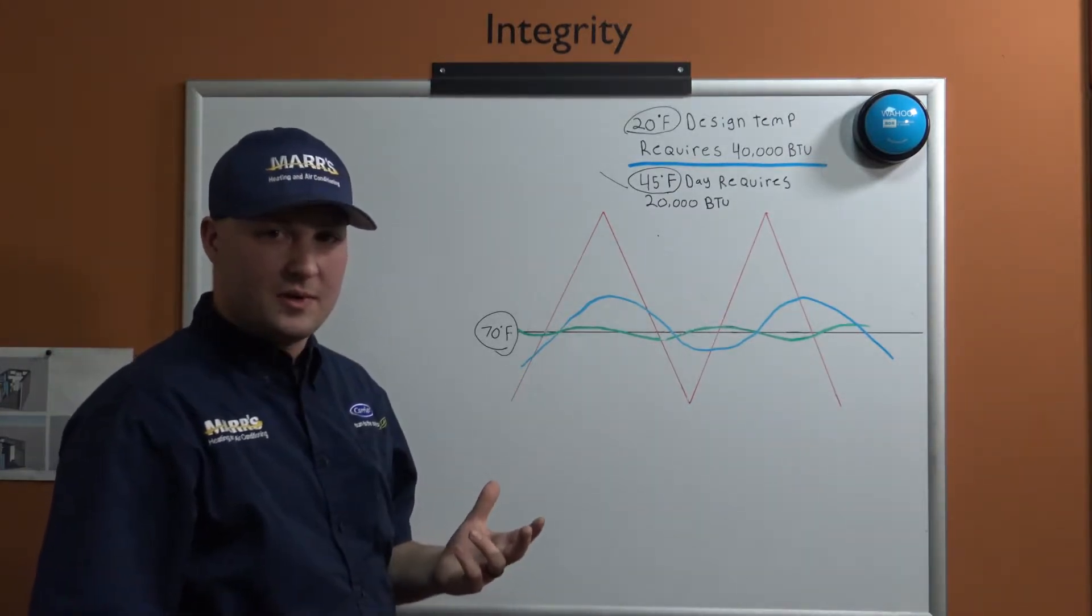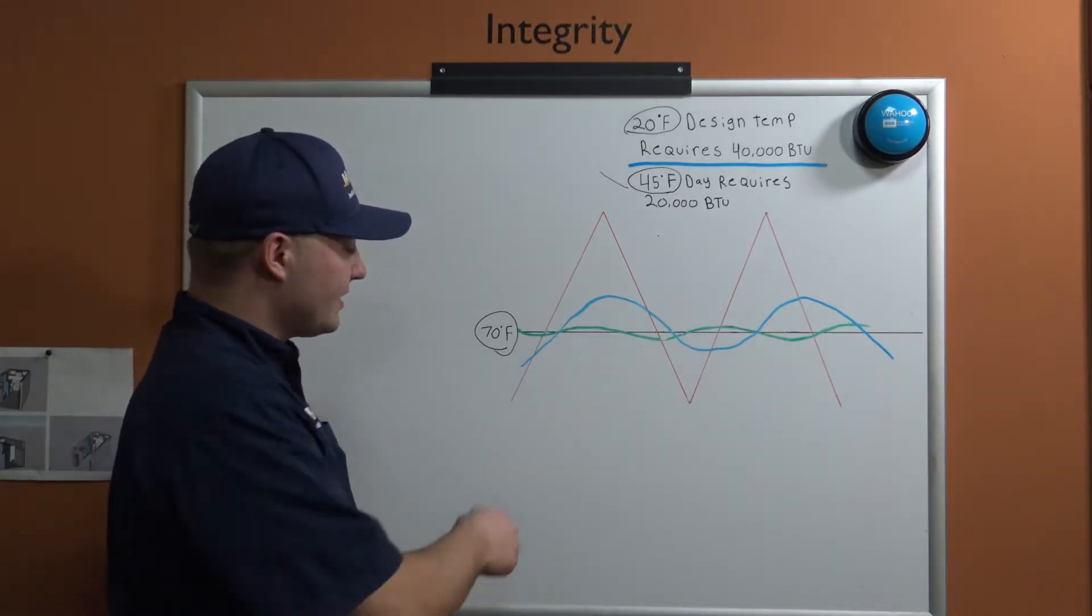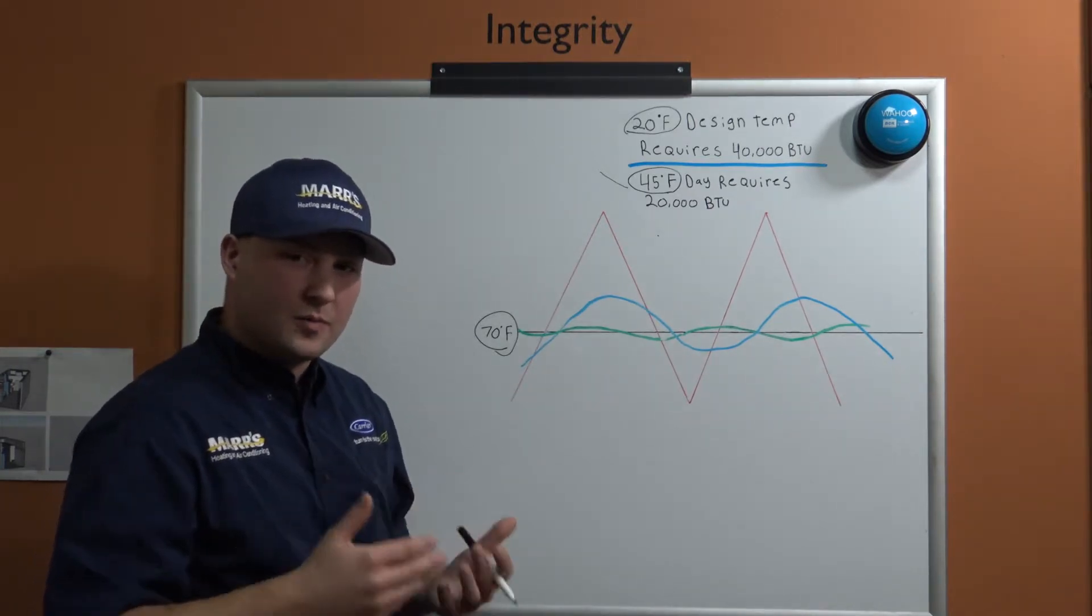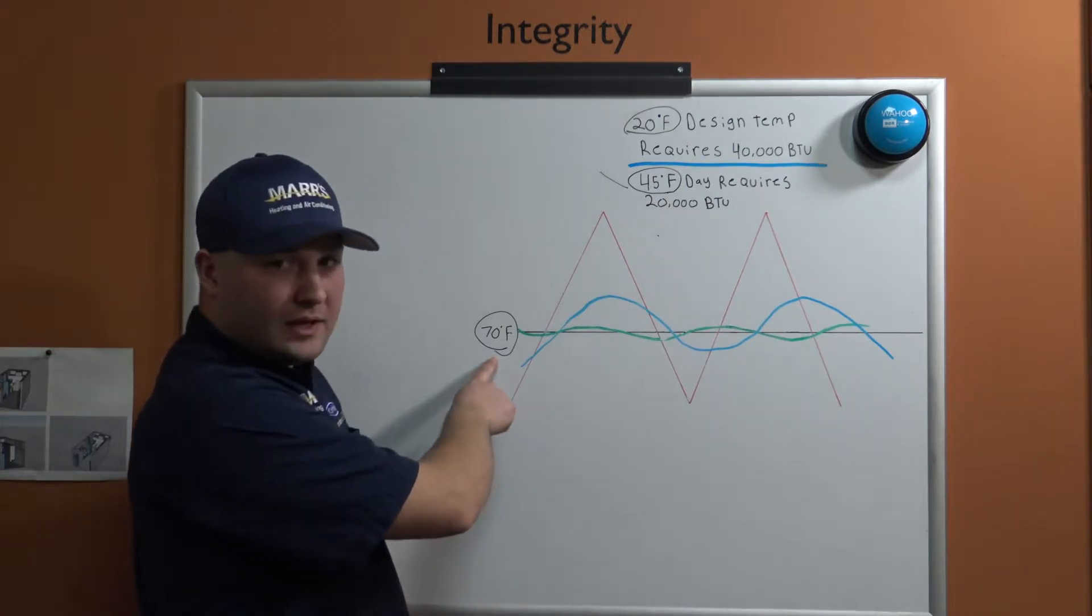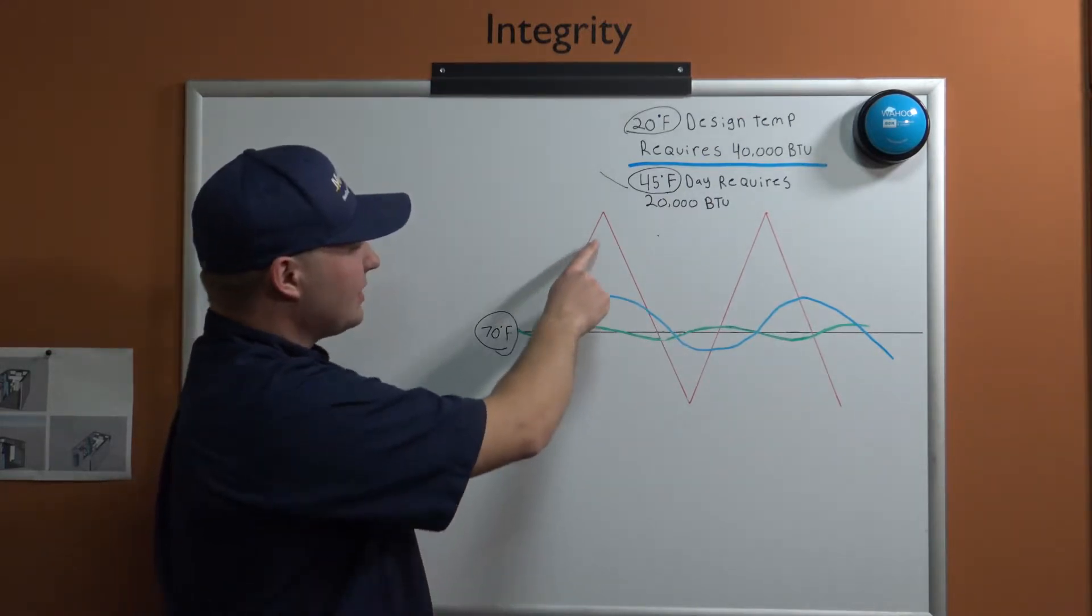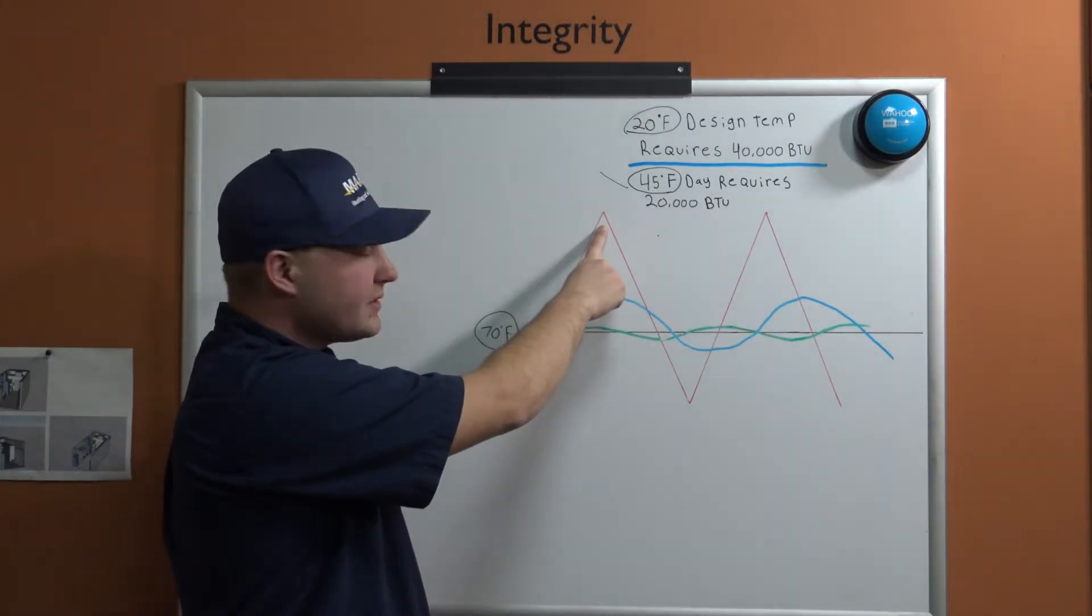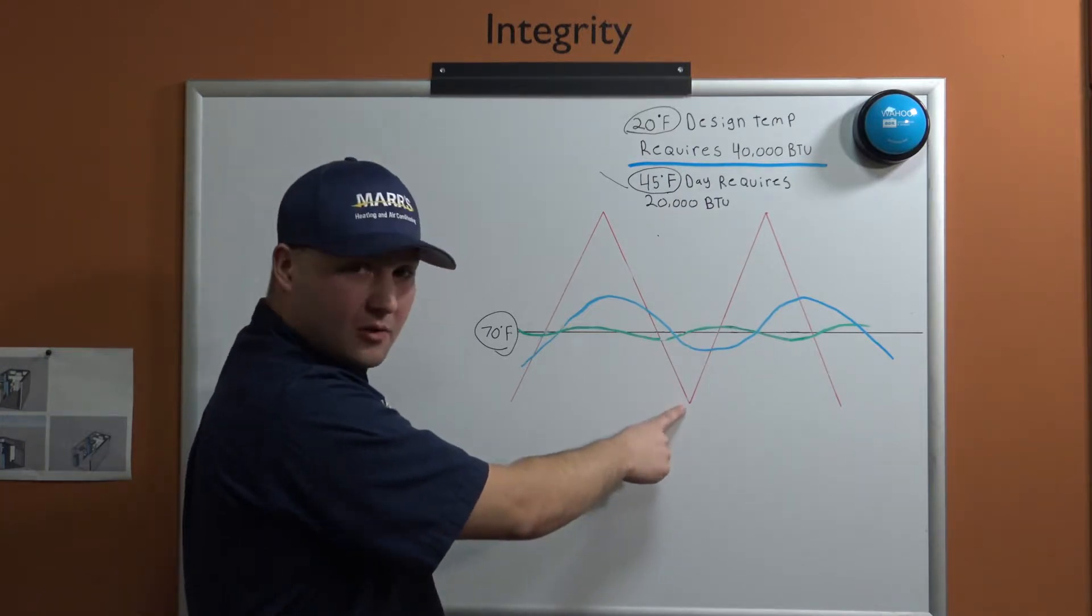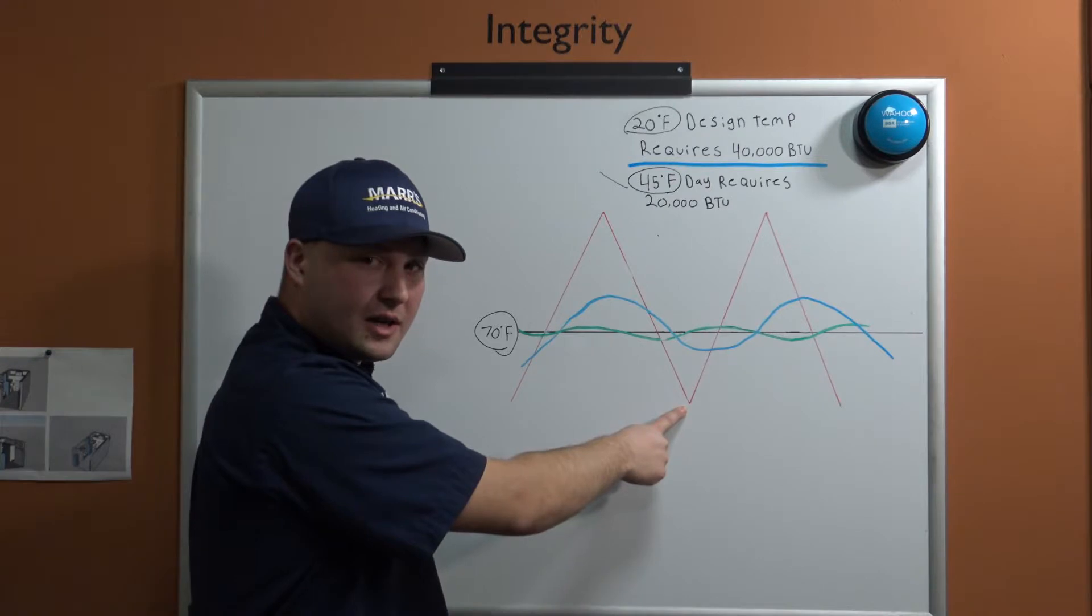With that, I'll start with single-stage equipment. Single-stage is outlined here in red. A single-stage piece of equipment is pretty simple to understand—it's either 100% on or 100% off. When we have a call for heat, we're going to actually overshoot that 70 degree mark by about three degrees, and then we're going to wait until we drop below our set temperature by about three degrees before we kick back on again.